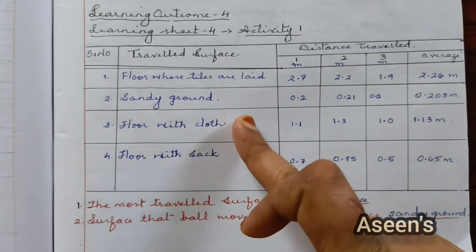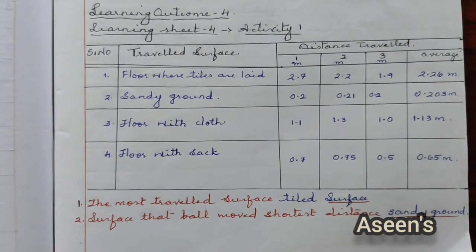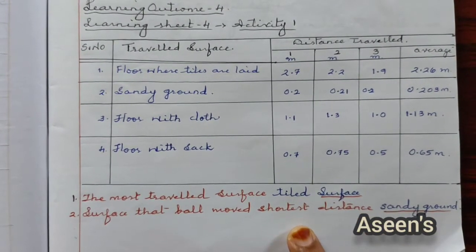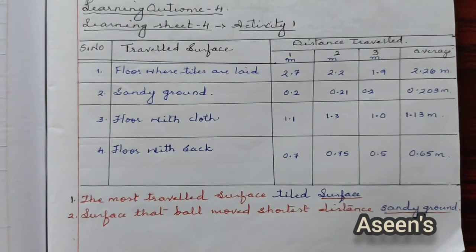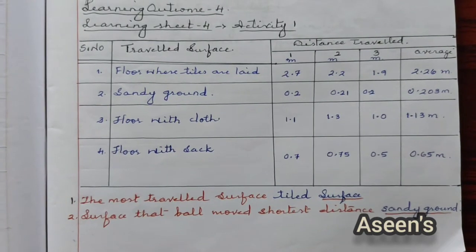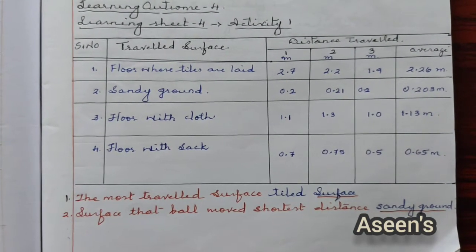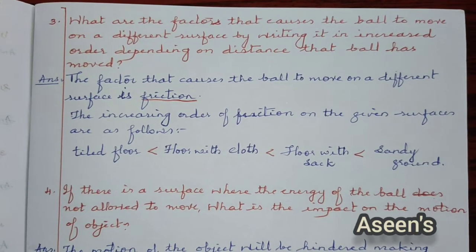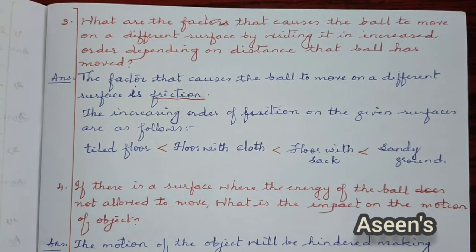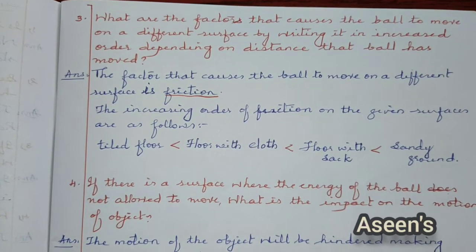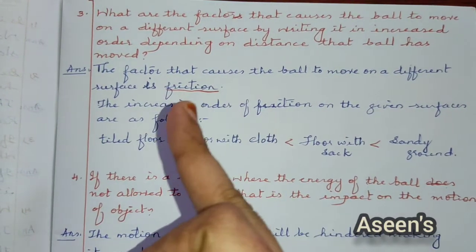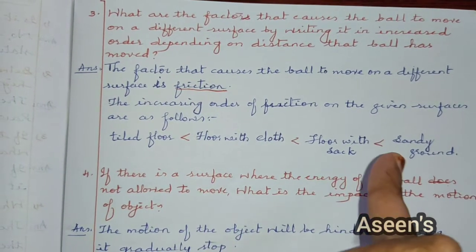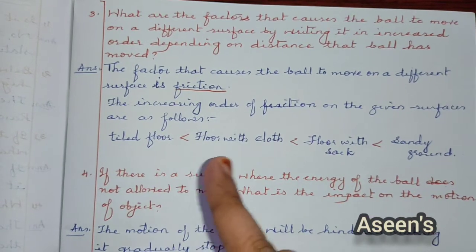The surfaces tested are tiled floor, sandy ground, floor with a cloth, and floor with a sack. The first two questions are fill-in-the-blanks: the surface most traveled is the tiled floor, and the surface where the ball moved the shortest distance is sandy ground. For question 3, the factors are ranked by friction force in increasing order: tile floor, floor with cloth, floor with sack, and finally sandy ground.